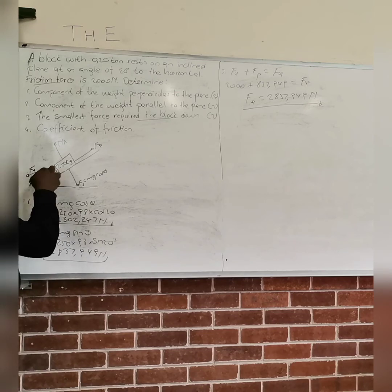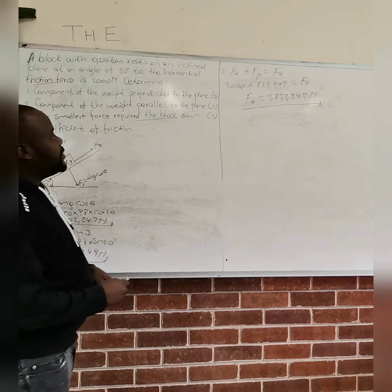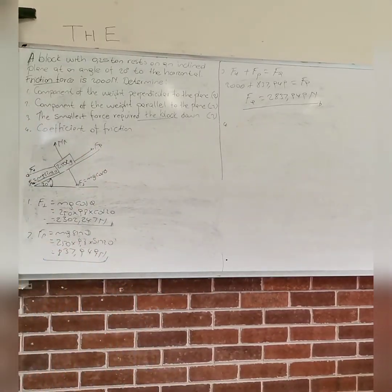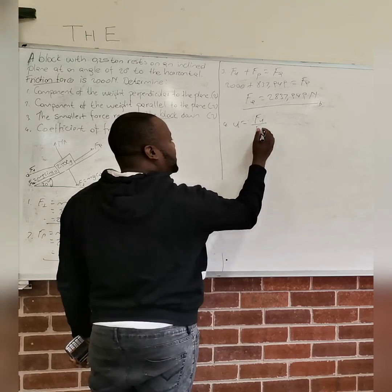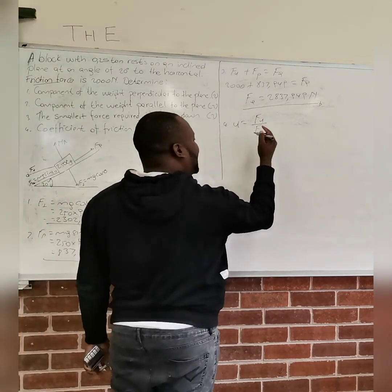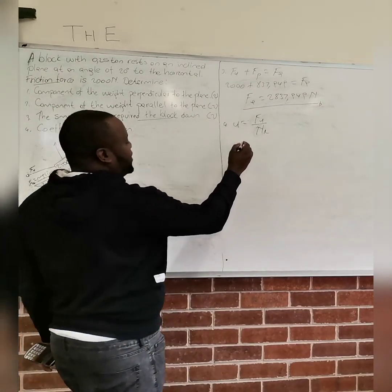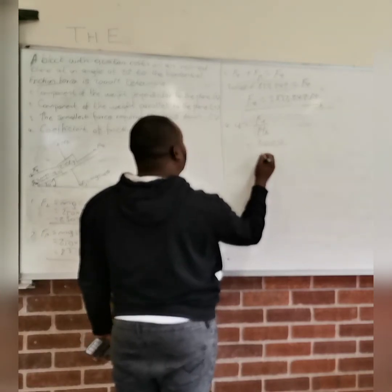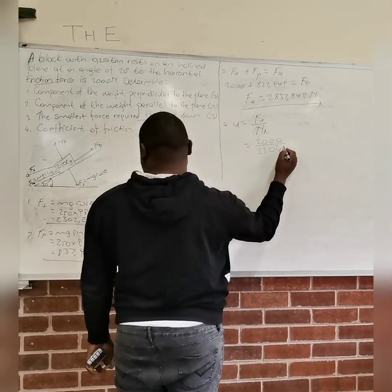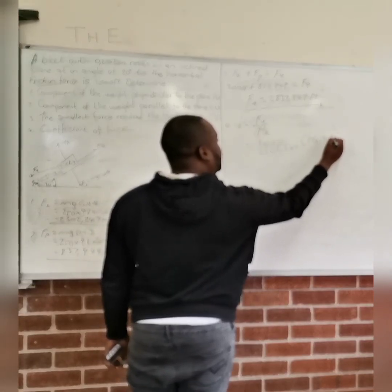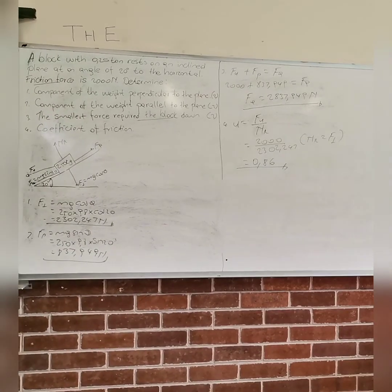Now if the applied force was going down, it would have been 1837.949 — like the difference of the two forces. Now the last one: they want the coefficient of friction. Your coefficient of friction is your friction force over your normal reaction. Your friction force is 2000, your normal reaction is 2302.42. So the answer is 0.86 — that is your coefficient of friction.